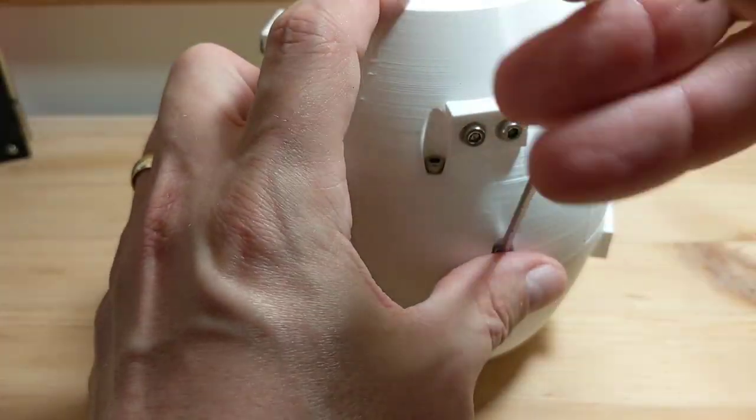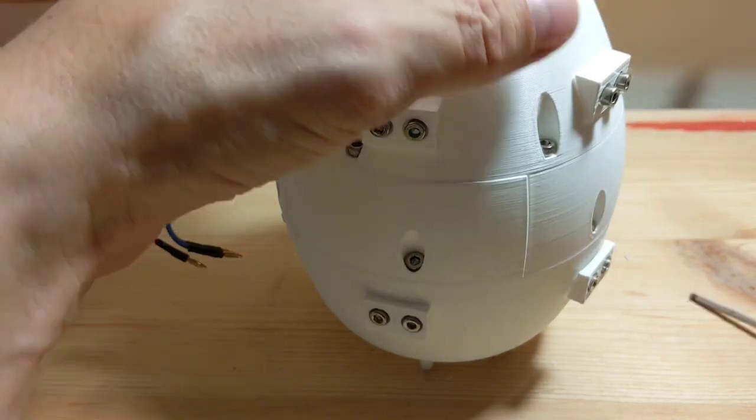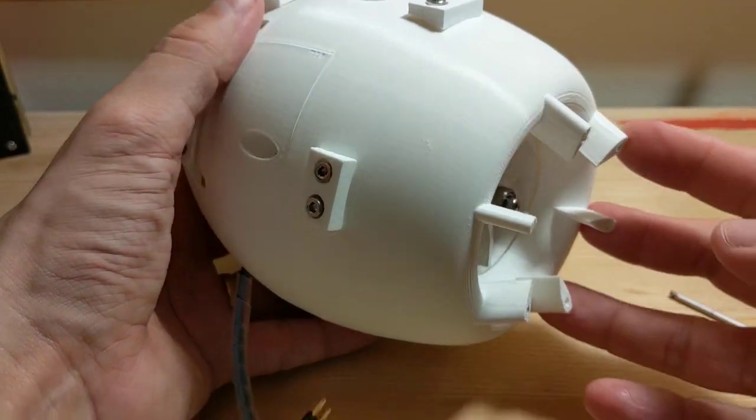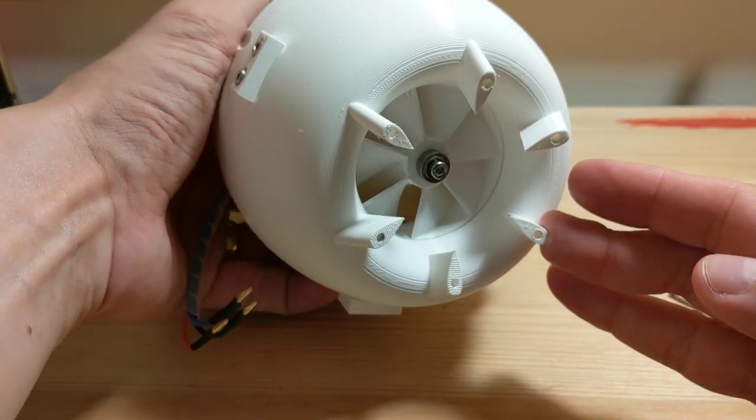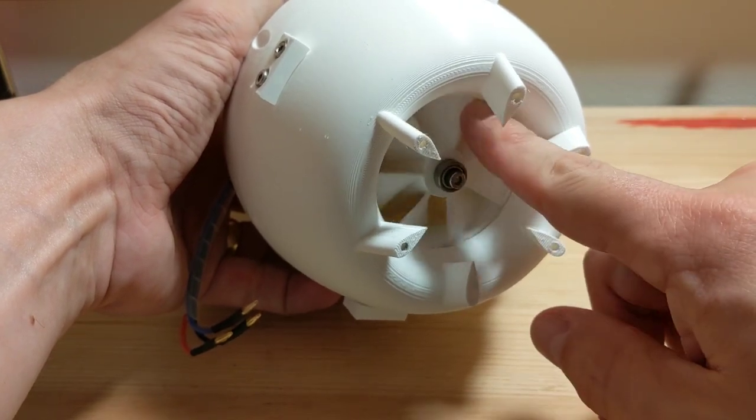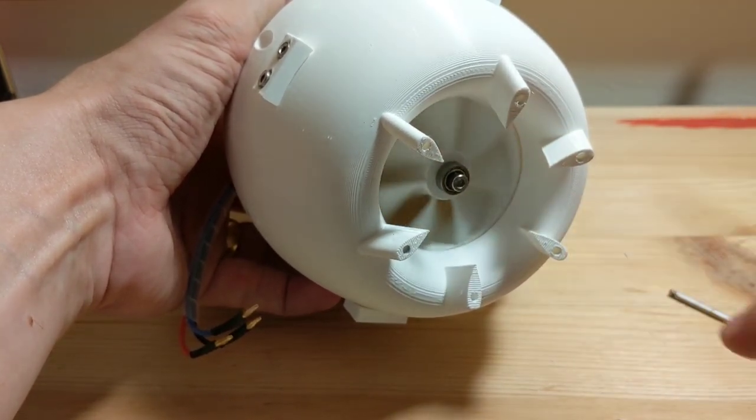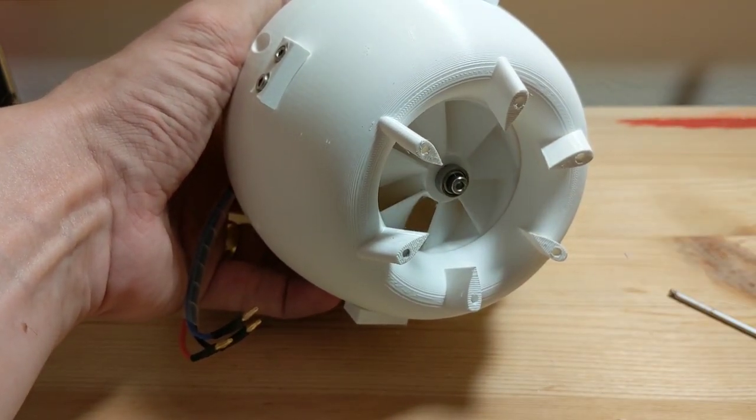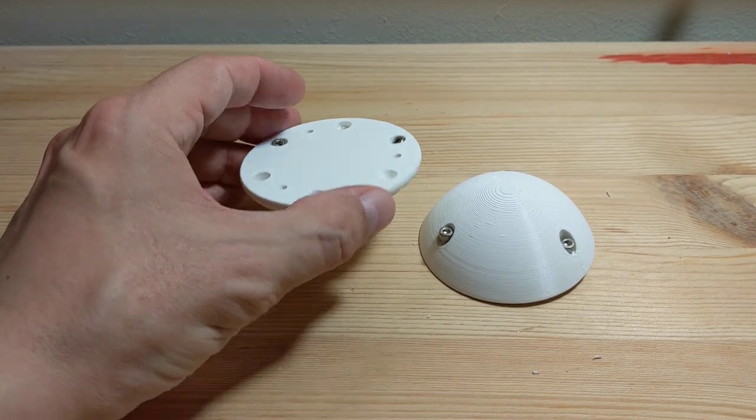Screw length isn't particularly important for most of these. It's basically long enough to actually allow them all to fit together. There isn't anything particularly critical there. And again we can check that the rotor still spins freely and we haven't caused anything to bind.